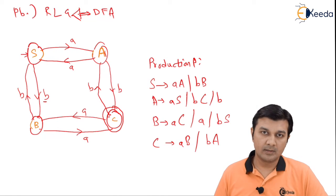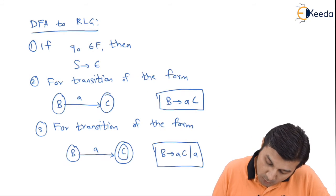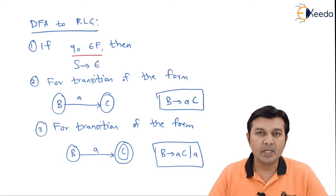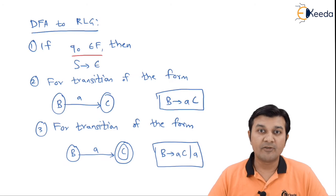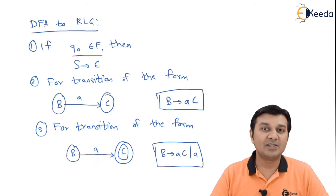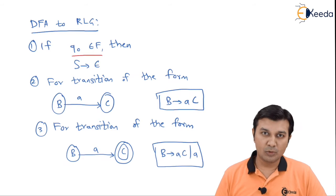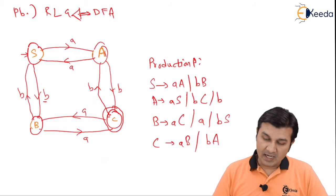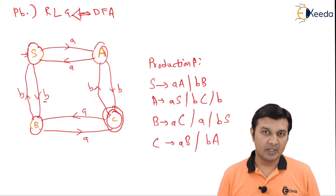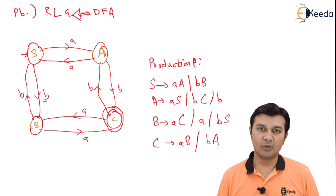What about rule 1? Rule 1 says if my q0 belongs to final state, that is, if my start state is the final state, only in that case will it be deriving an epsilon. If you observe our problem closely, my start state is only the start state. It is not the final state, and therefore no epsilon transitions are involved.